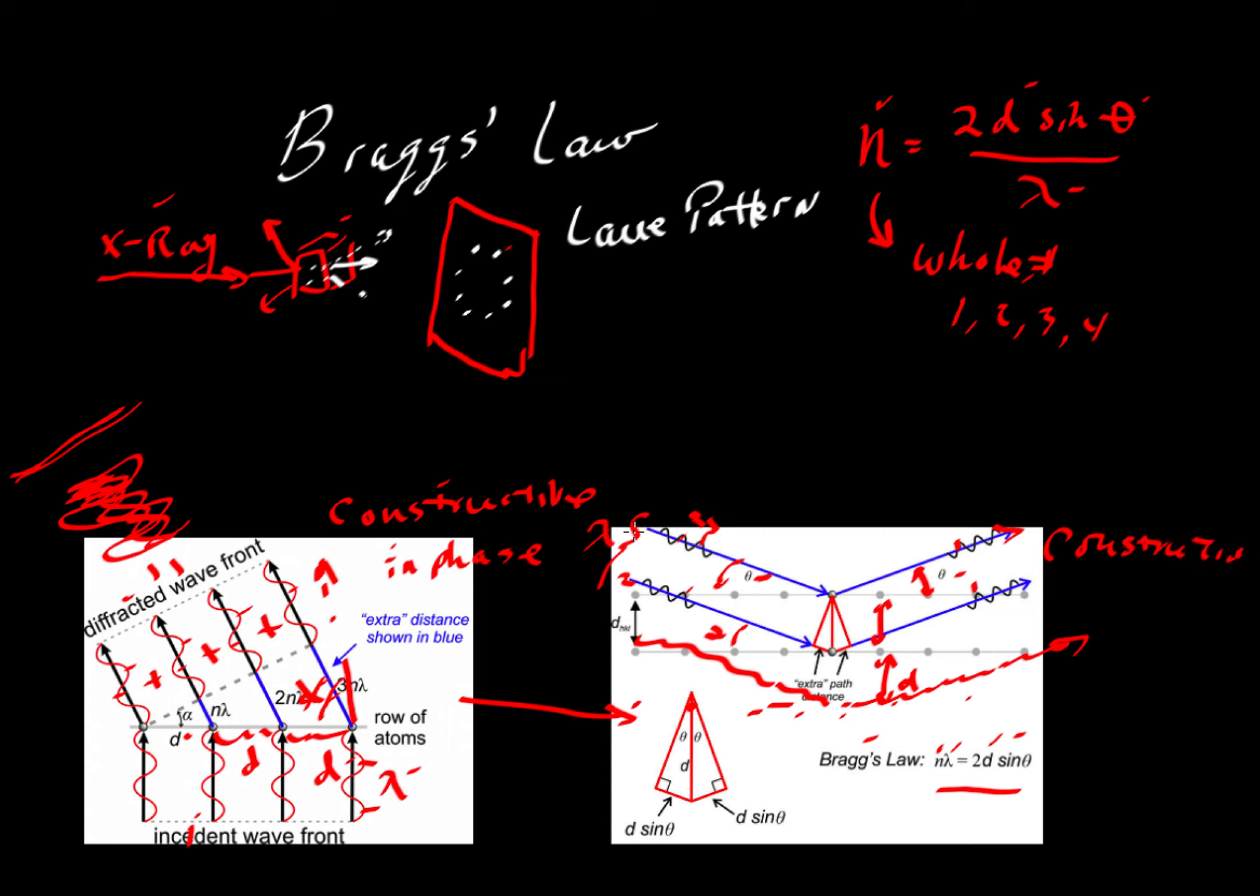So again, we can pick the lambda value, we can decide the kinds of energy and wavelengths that are going to be the x-rays that will impinge on the material. The D value is fixed by the material itself that's being bombarded by x-rays. So what we could do is search for values of theta where n has a whole number. If you pick some other value of theta where n is not a whole number,